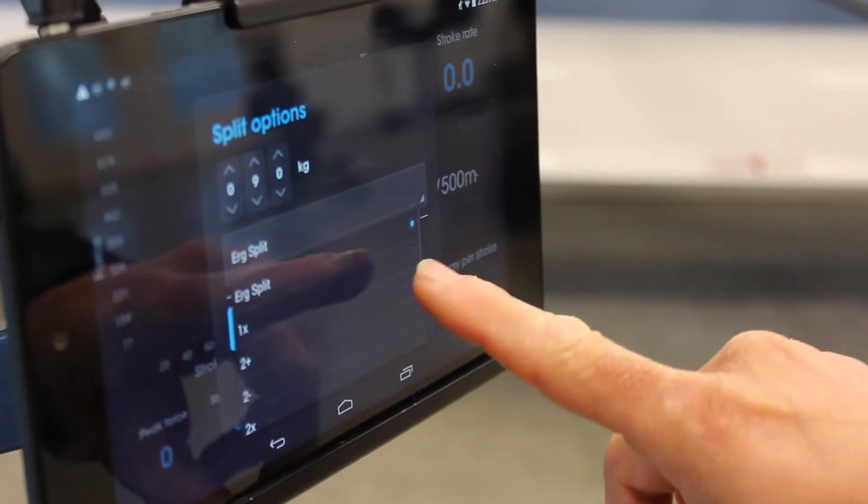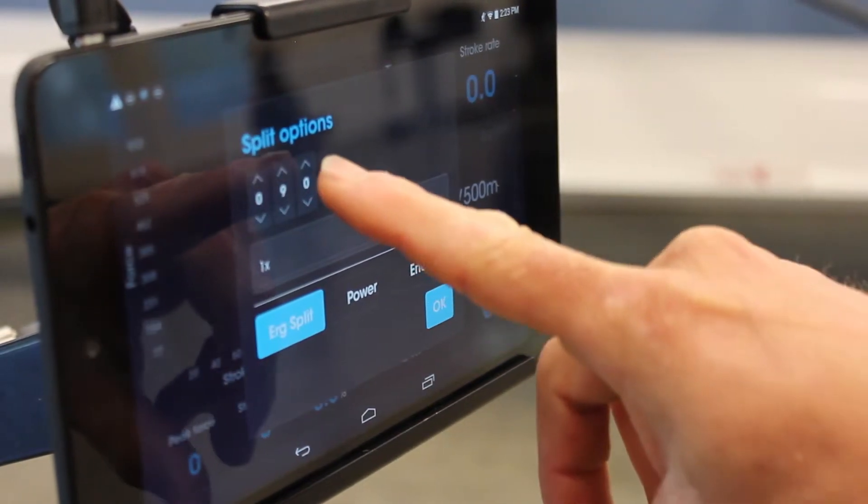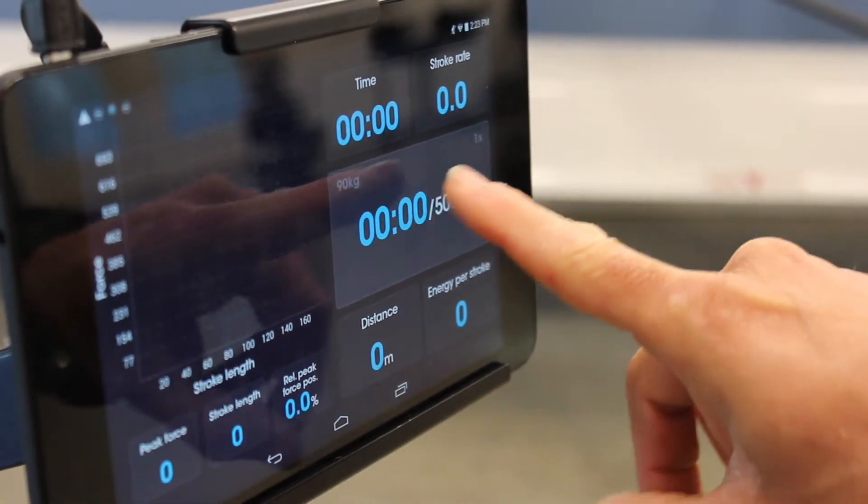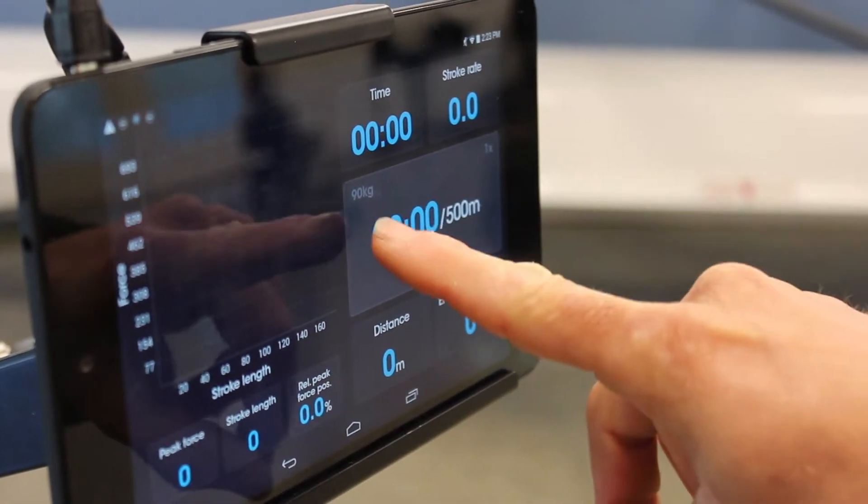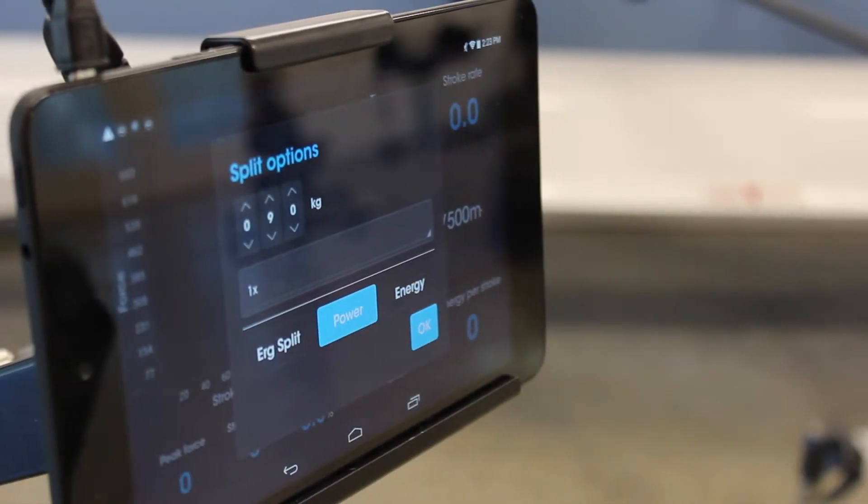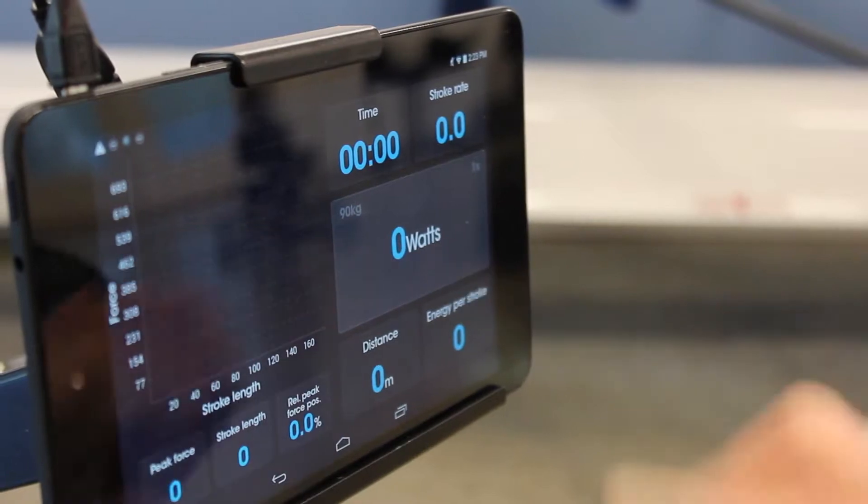We can also put a boat, so we want to put a single at 90 kilos. Now here we're getting a split that is adjusted if I row in a single and I weigh 90 kilos. The second thing I can do is work on power and it will give me watts.